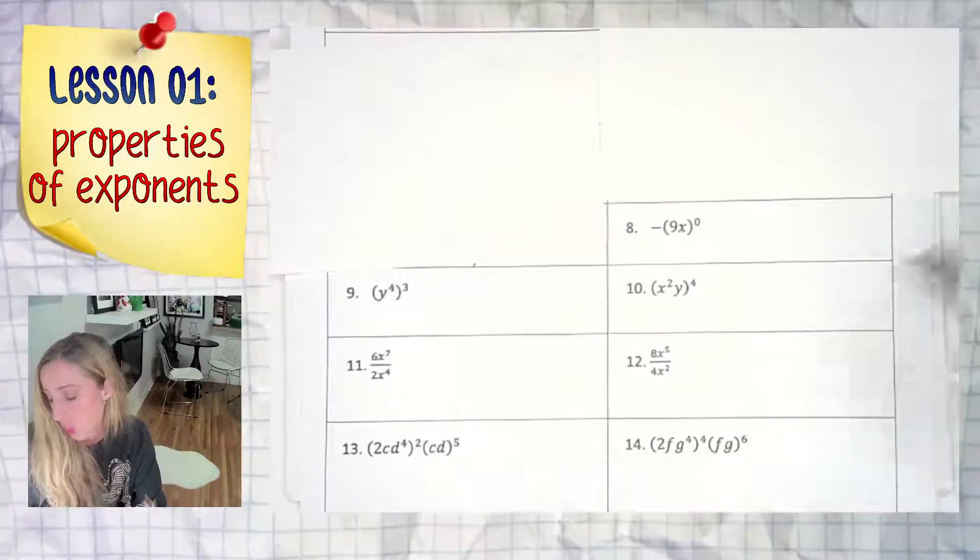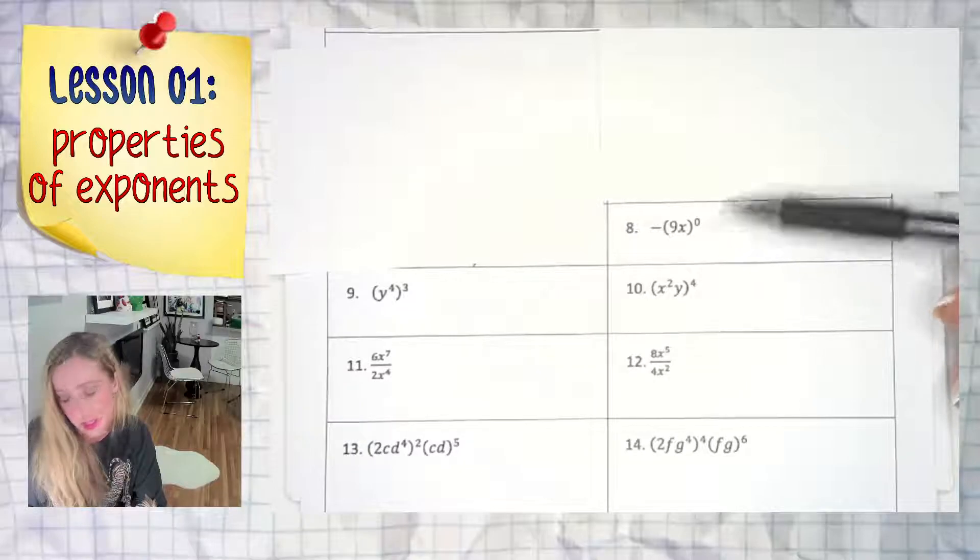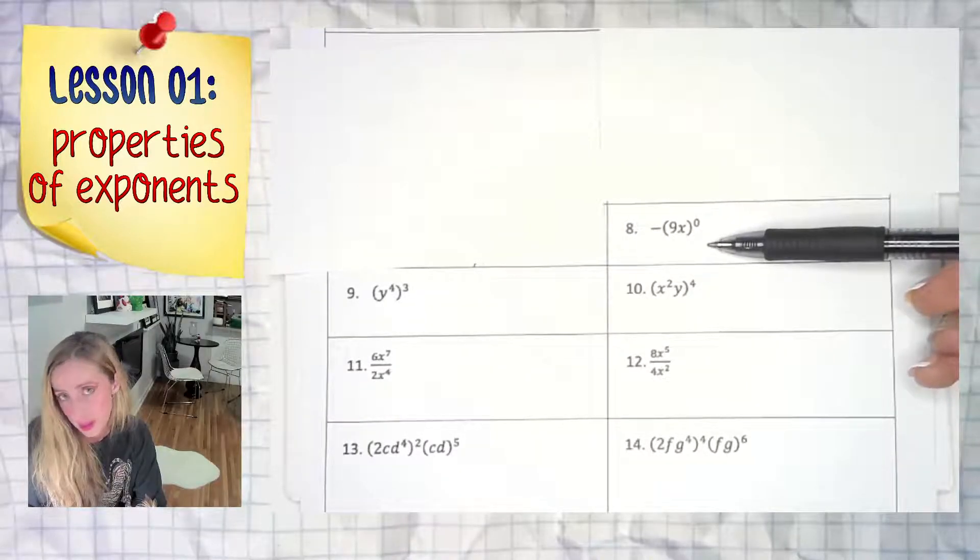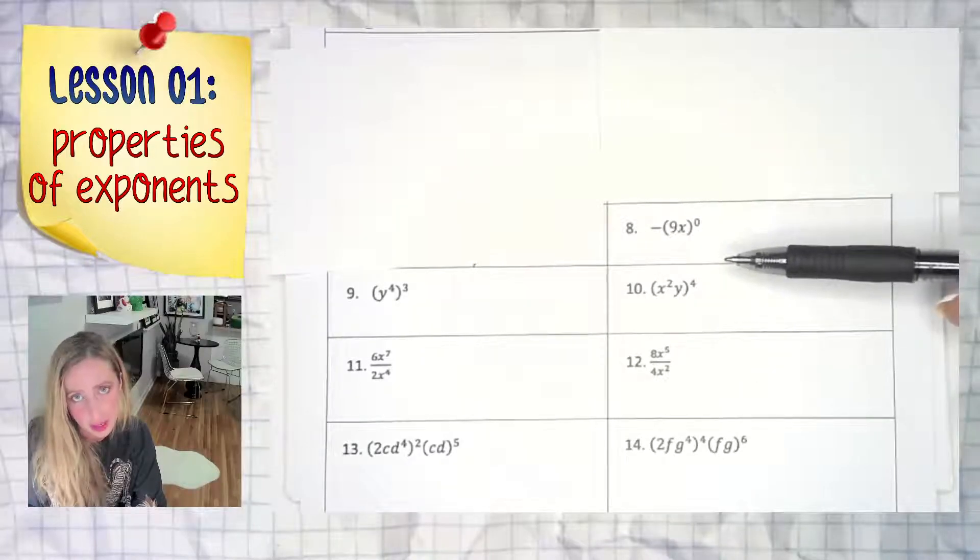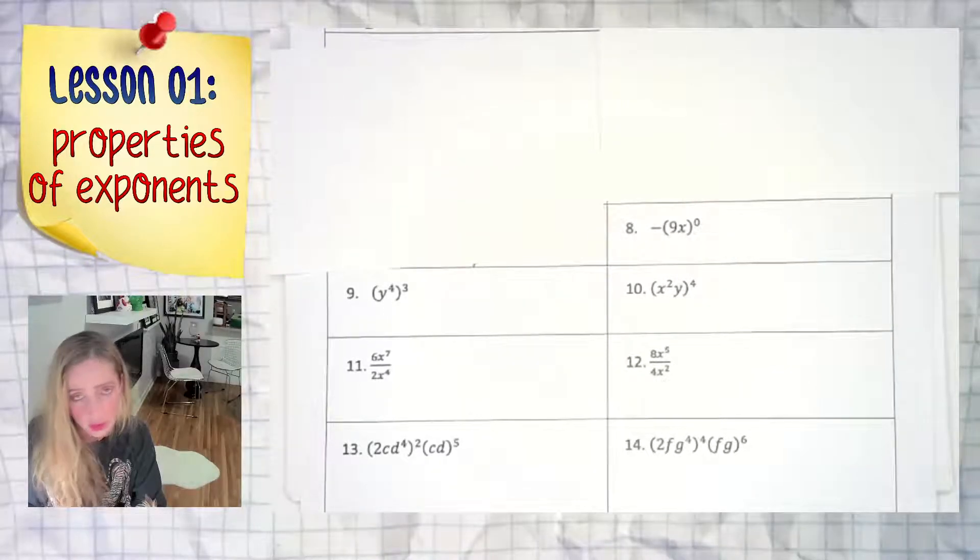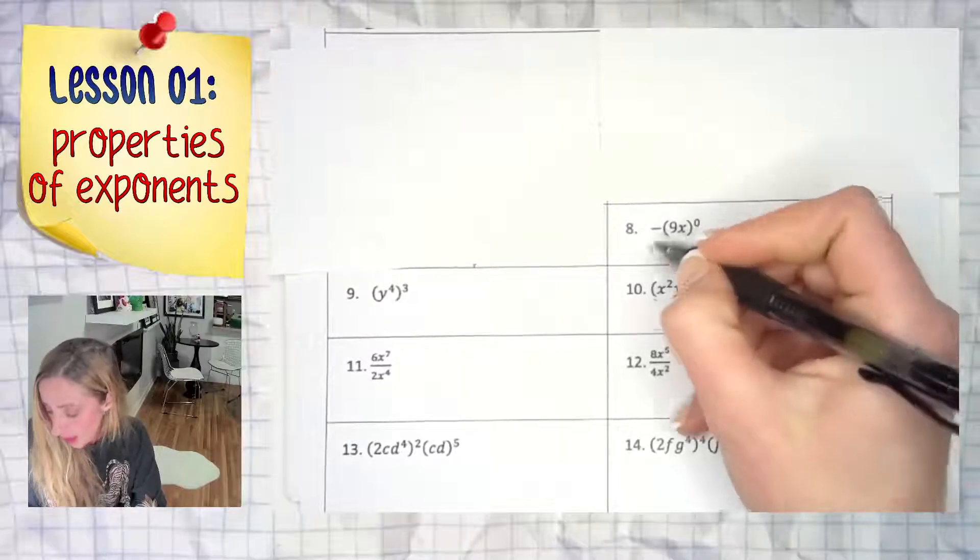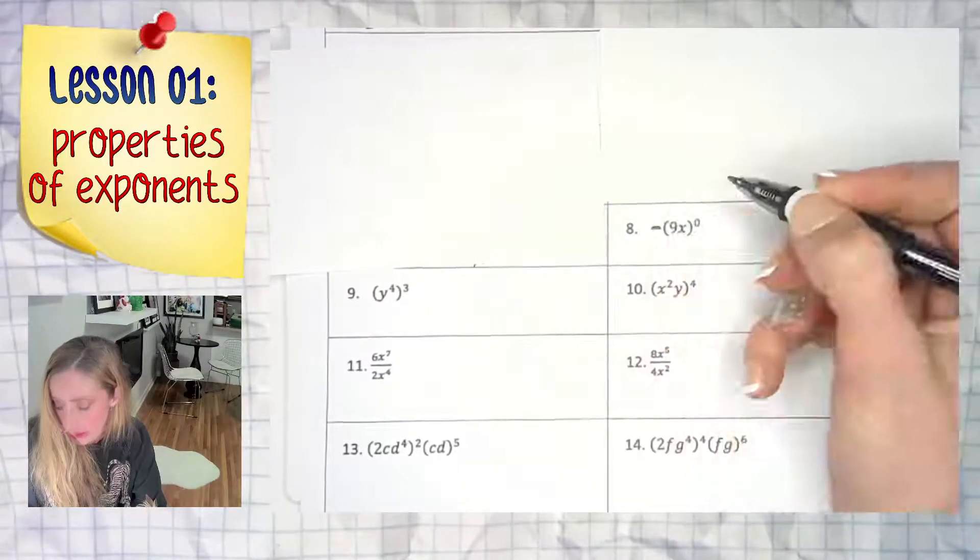Hello everybody and welcome to another classic example with that zero exponent just sending us running for the hills, scared of what the answer is supposed to be. Maybe we don't remember it, and we even have that sneaky little negative out front.